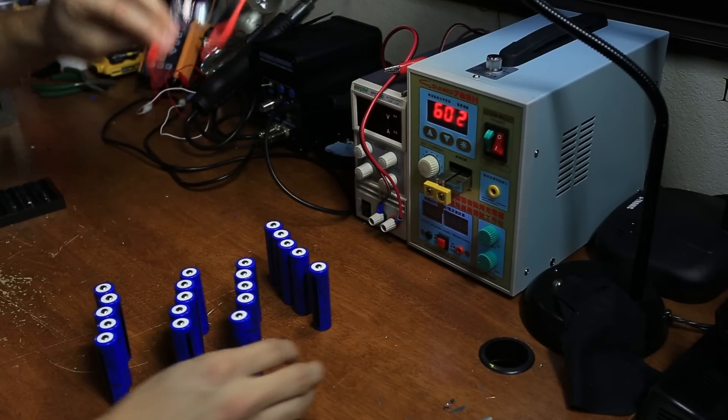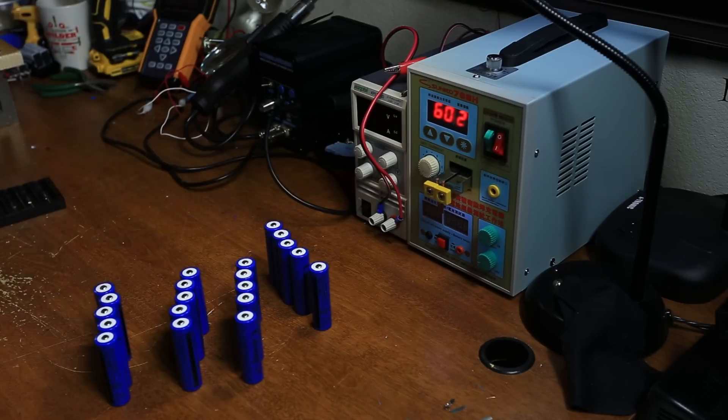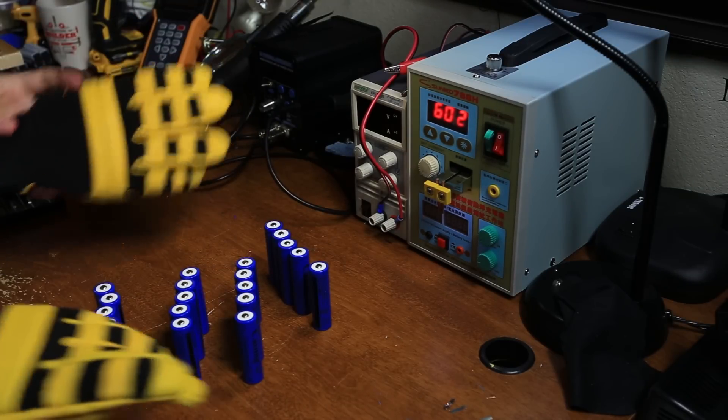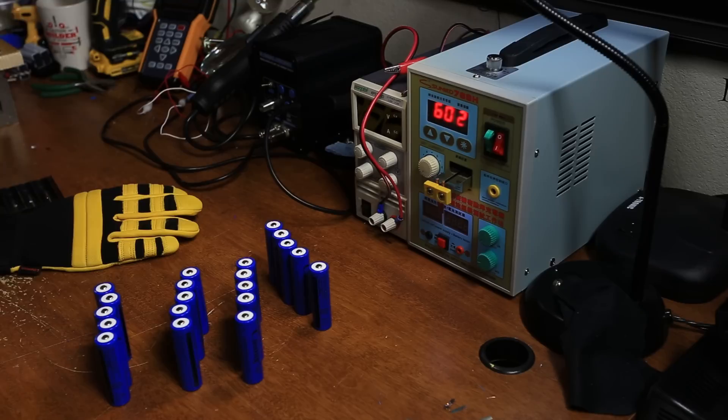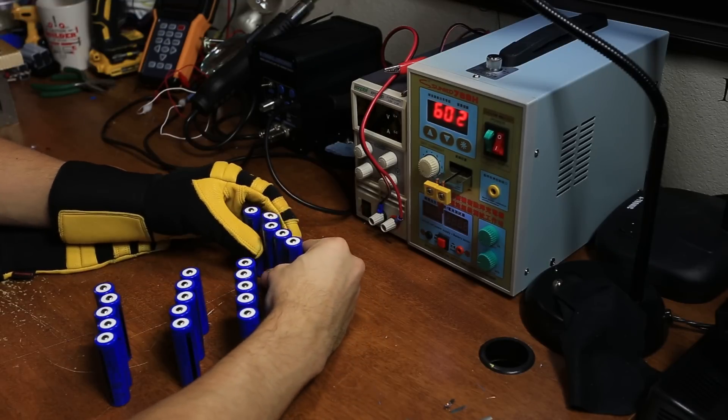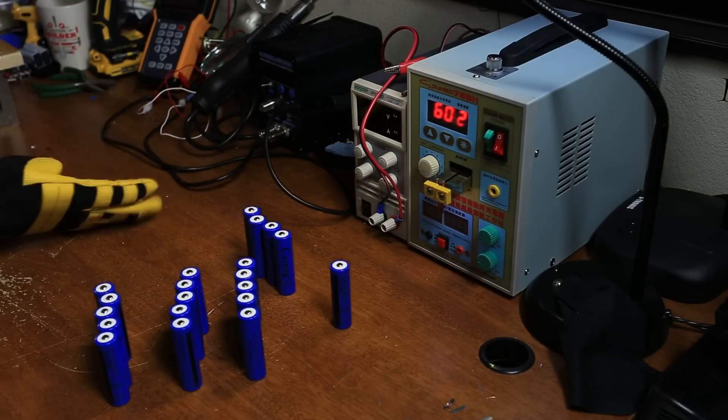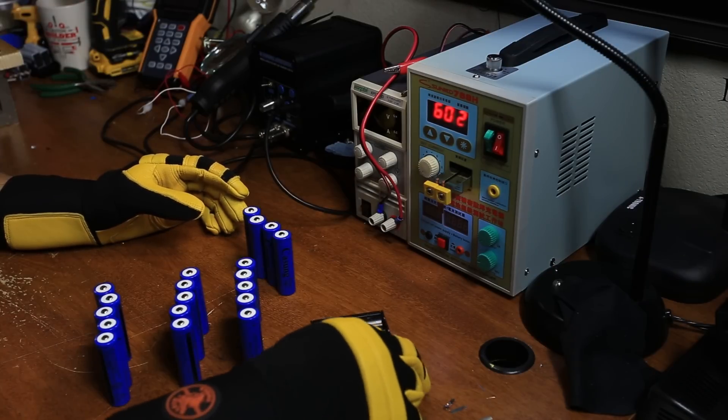So we're gonna need 20 batteries to build the cell that we want. Precautions: always use safety goggles, especially with crap from China, and always use gloves because when you're spot welding these things can splatter molten metal on you, your eyes, or your hands.